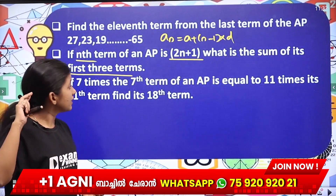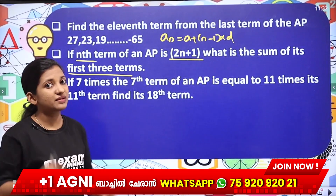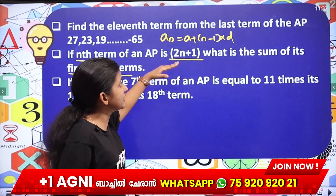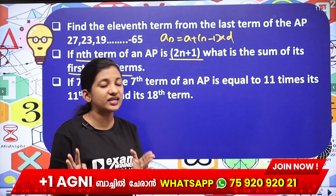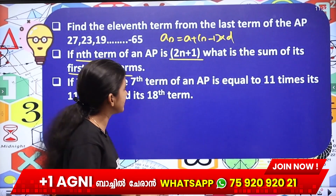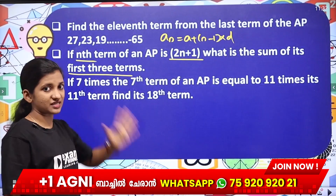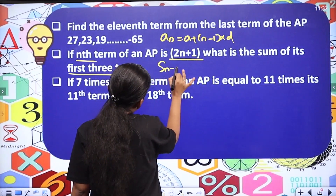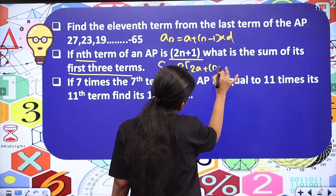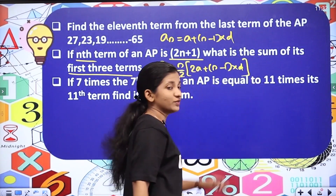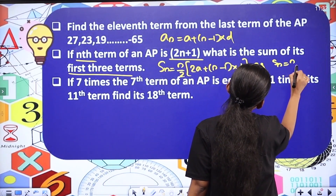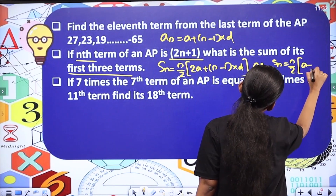Second question: if the nth term of an AP is 2n plus 1, what is the sum of its first 3 terms? I will determine the sum of the entire term. The first term and second term will be found. The common difference is the difference between consecutive terms. Then the first three terms and Sn equal to n by 2 into 2a plus n minus 1 into d. Also Sn equal to n by 2 into a plus an.